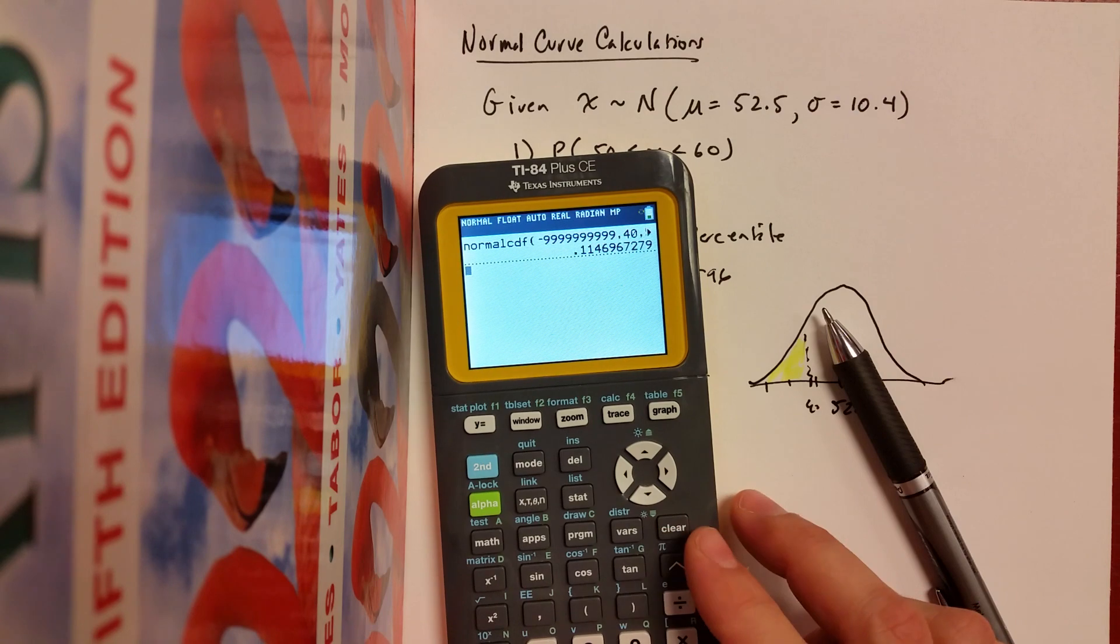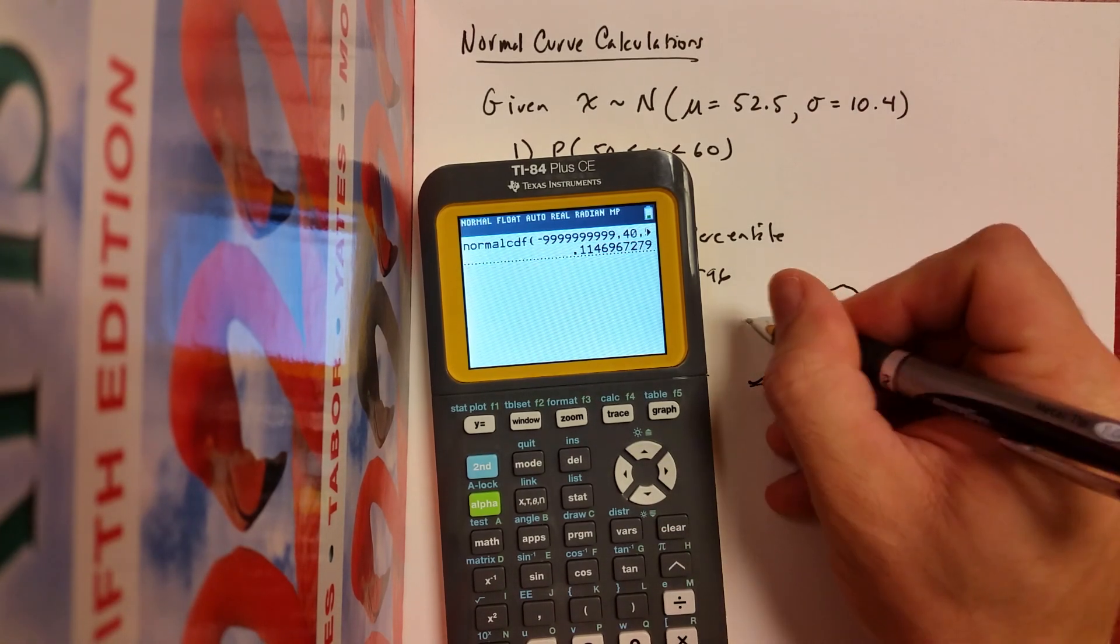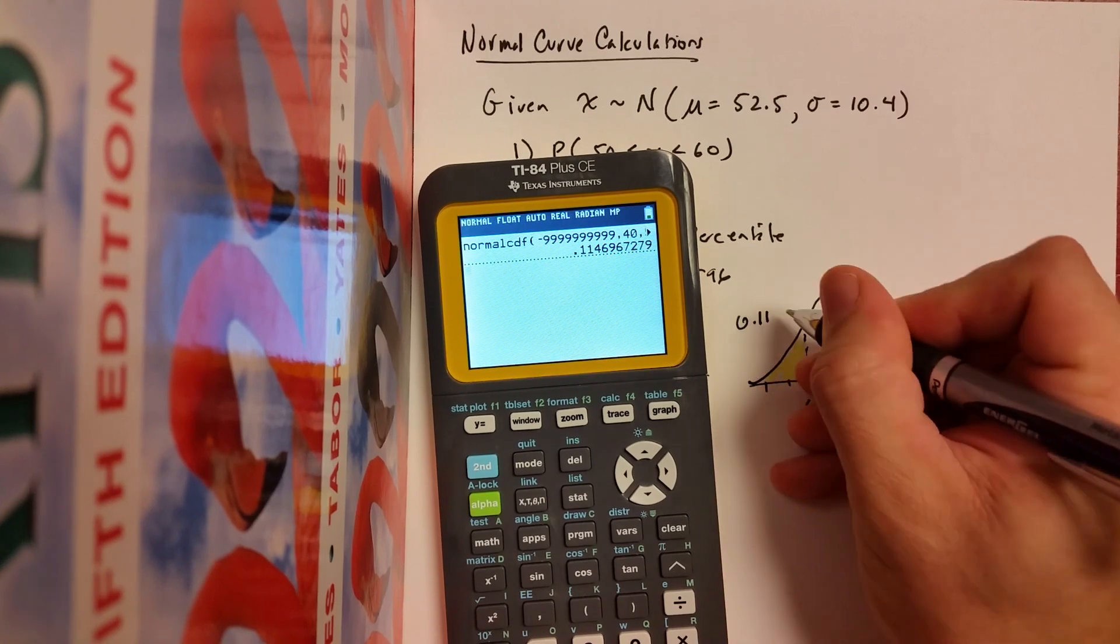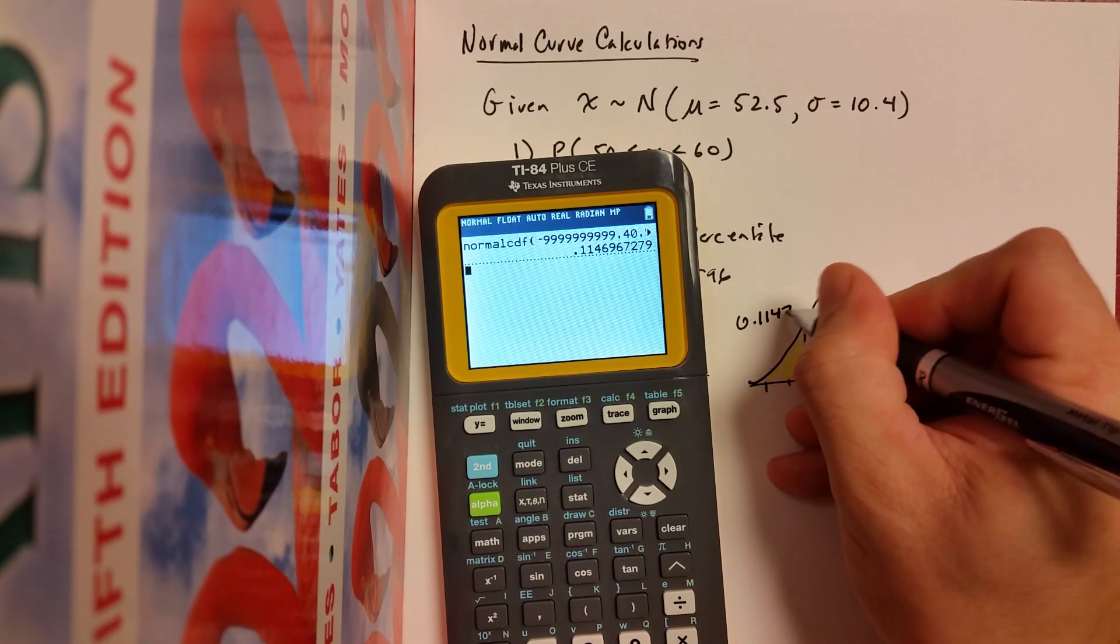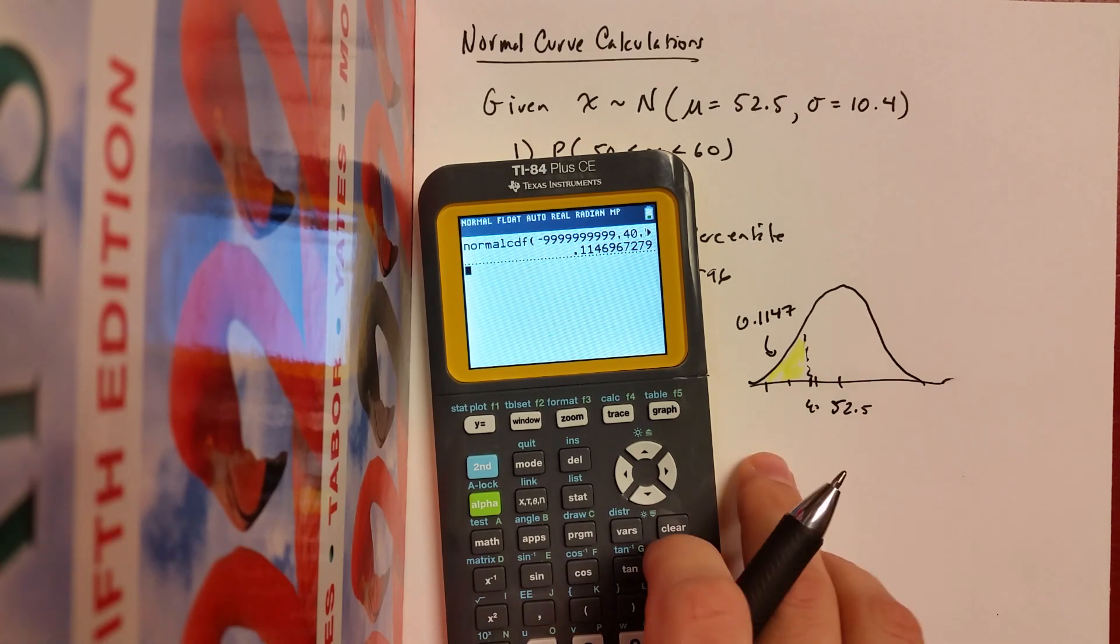Let's paste it and I'll just hit enter. Check it out. I got, apparently this is 0.1147 or about 11.47%. Huh? That was nice.